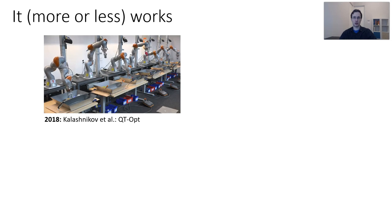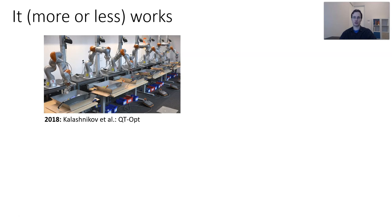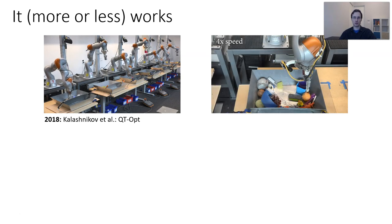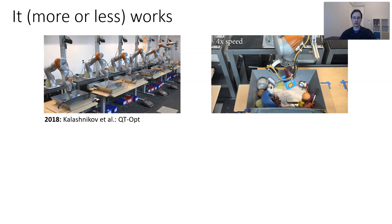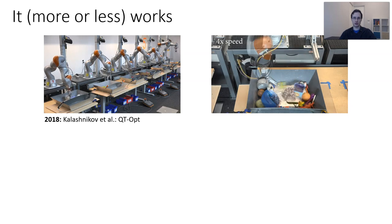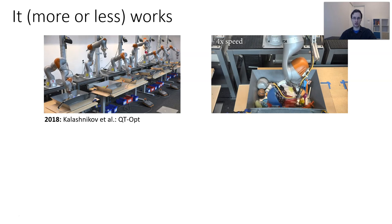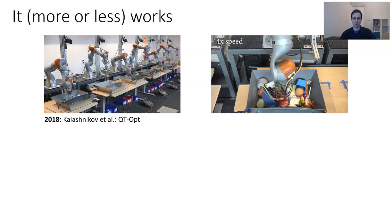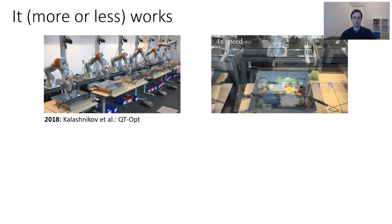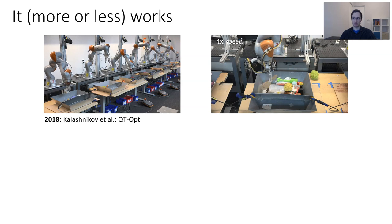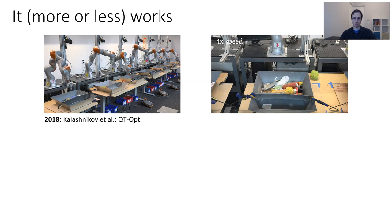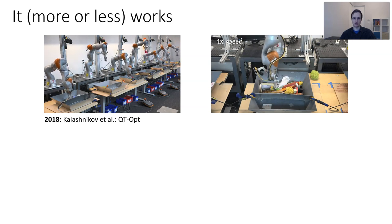Here's an experiment that we did at Google a couple of years back. This is a method we called QT-Opt, which is a deep reinforcement learning algorithm for robotic grasping. QT-Opt was trained in the real world with dozens of robots collecting data in parallel, and it works really well. This is basically the state-of-the-art vision-based grasping system you can build today, and it produces some pretty interesting behaviors — you can pick up objects in cluttered scenes, small objects, big objects, and so on.